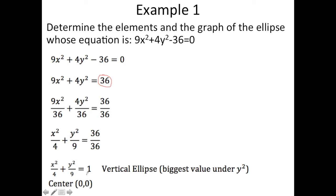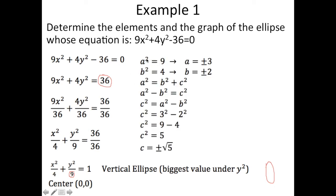This is now in standard form. Notice that h and k are both 0, so the center is at (0, 0). Because the biggest number — 9 — is under y², we are working with a vertical ellipse. Knowing the center, we find a by taking the square root of 9, giving a = ±3. The value of b is ±2. Using the condition c² = a² − b², we get c = √5.